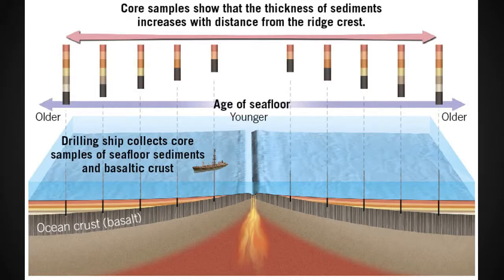This figure shows a mid-ocean spreading ridge where oceanic crust is formed. The crust is moving away from the spreading ridge, so the youngest crust is nearest the ridge and the oldest crust is furthest from the ridge. As time passes, more sediment is deposited, so the thickness of sediment increases along with the age of the crust. The oceanic crust is composed primarily of basalt. More on this in the online activity next week.